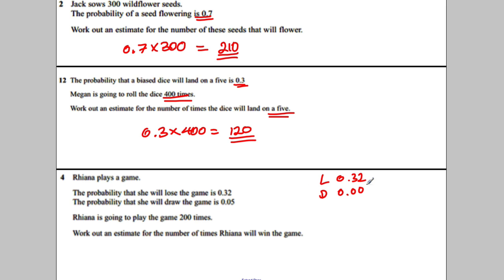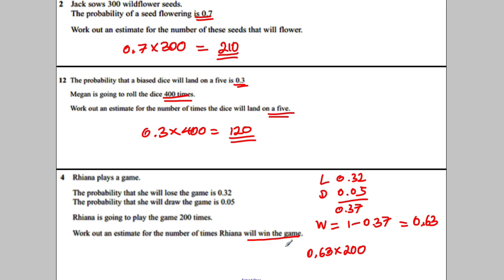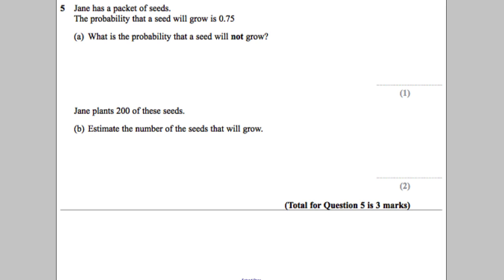Rihanna plays a game: she loses with probability 0.32 and draws with probability 0.05. Adding those gives 0.37, so P(win) = 1 − 0.37 = 0.63. An estimate for the number of wins over 200 games: 0.63 × 200. Work it out: 63 × 2 = 126, and adjusting for the decimal gives 126. The answer is 126.